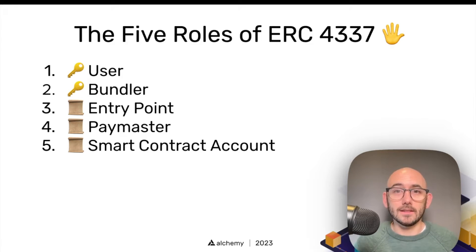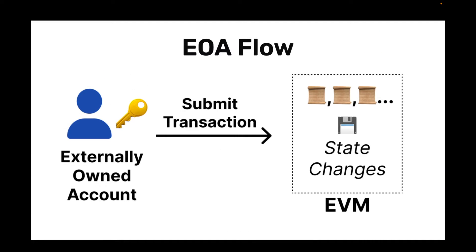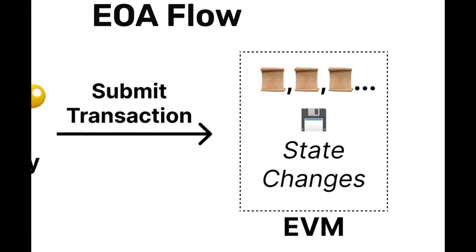In a traditional EOA flow, a user has a wallet that lets them use an externally owned account where they have a private key to sign a transaction, which they then submit to a blockchain node. Behind the scenes, a blockchain node takes that signature and uses elliptic curve recovery to recover the address associated with that private key. That mathematical linking between the private key and the address is what allows the user to make state changes on behalf of that address on chain — and this is what we're trying to get to in our ERC-4337 flow.